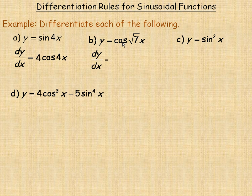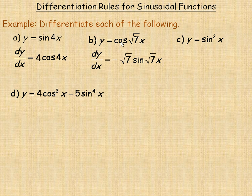In part b, we're differentiating a cosine function. Remember the derivative of cosine is negative sine. The reason the √7 appears is the same as when differentiating sin(4x) — we multiply by the derivative of the inside function. The derivative of √7·x is √7. So the derivative of cos(√7·x) is negative sine(√7·x) multiplied by √7, giving us -√7·sin(√7·x).